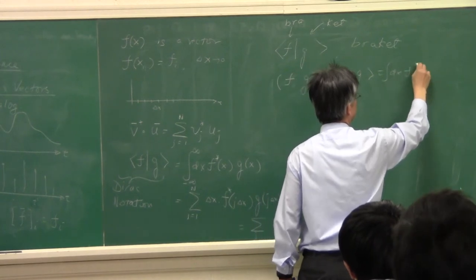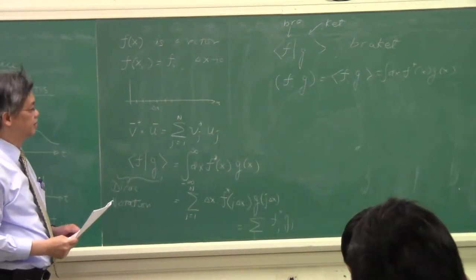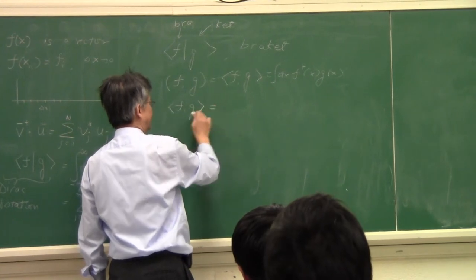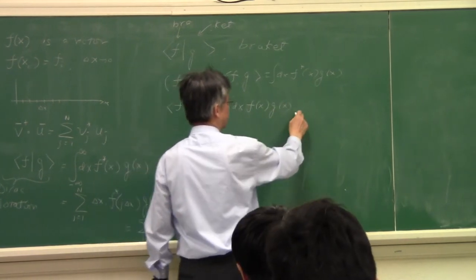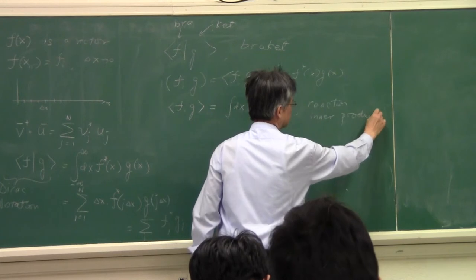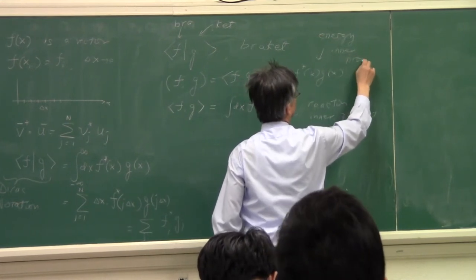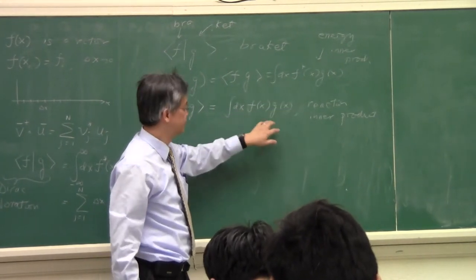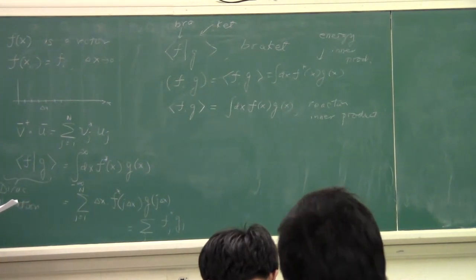All of them mean the same thing. But in electromagnetics, sometimes we say this explicitly: an inner product of f and g might just mean f(x) times g(x) — this is usually called a reaction inner product. The other form, with conjugation, is usually called an energy inner product, because if f equals g, this gives the magnitude squared, which looks like an energy. The reaction inner product is something you might learn later in your electrical engineering courses.